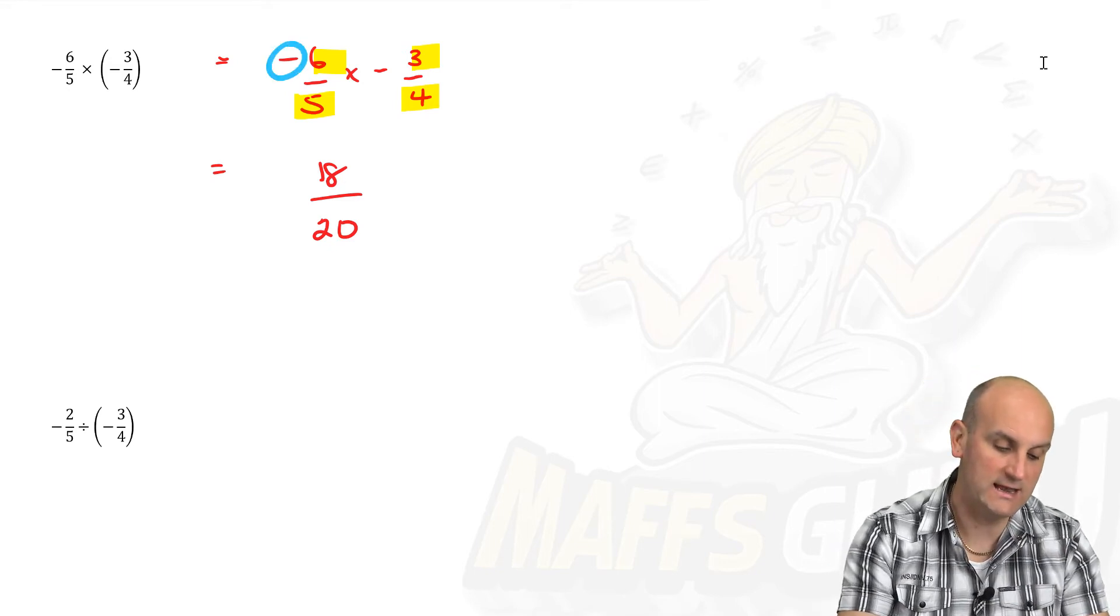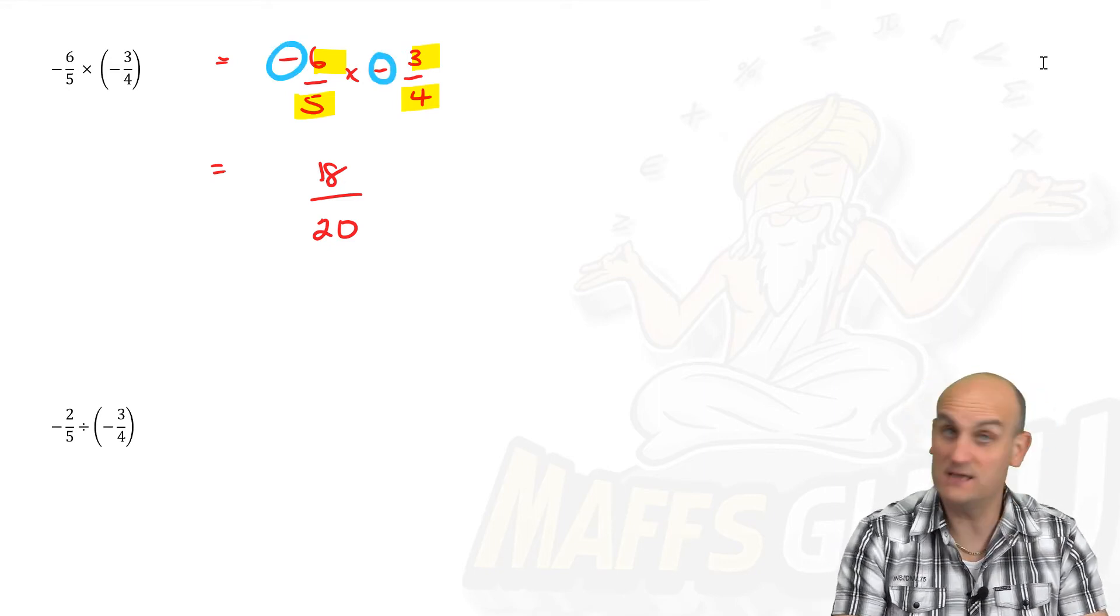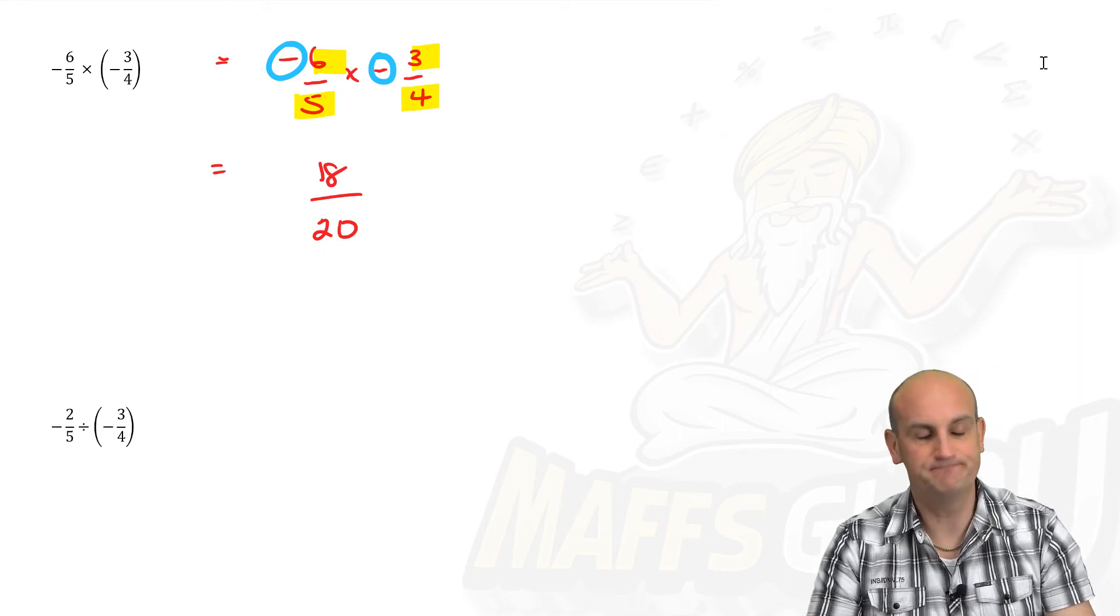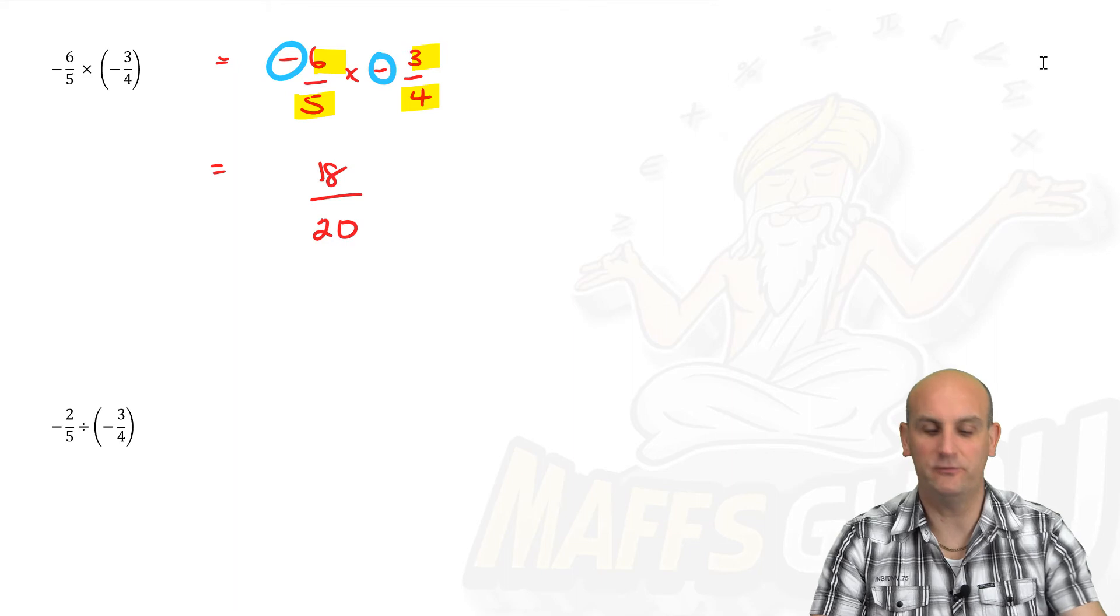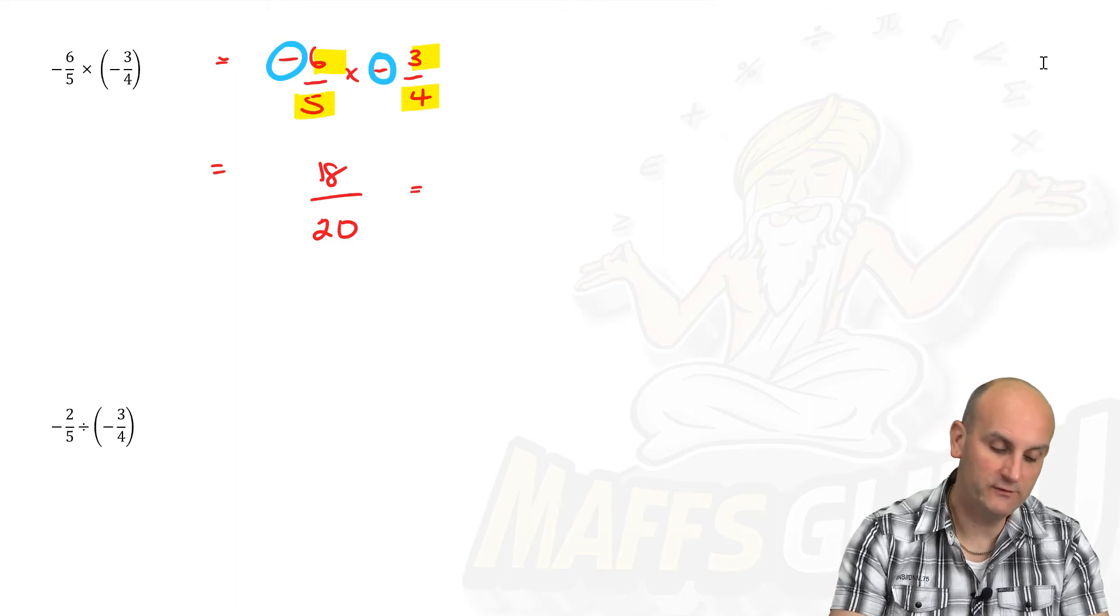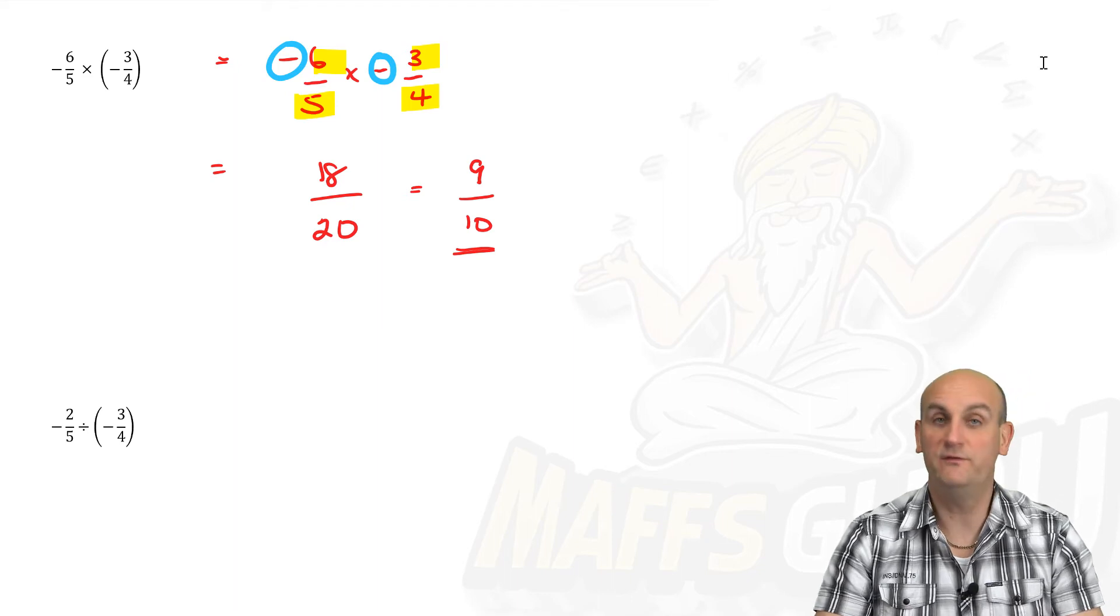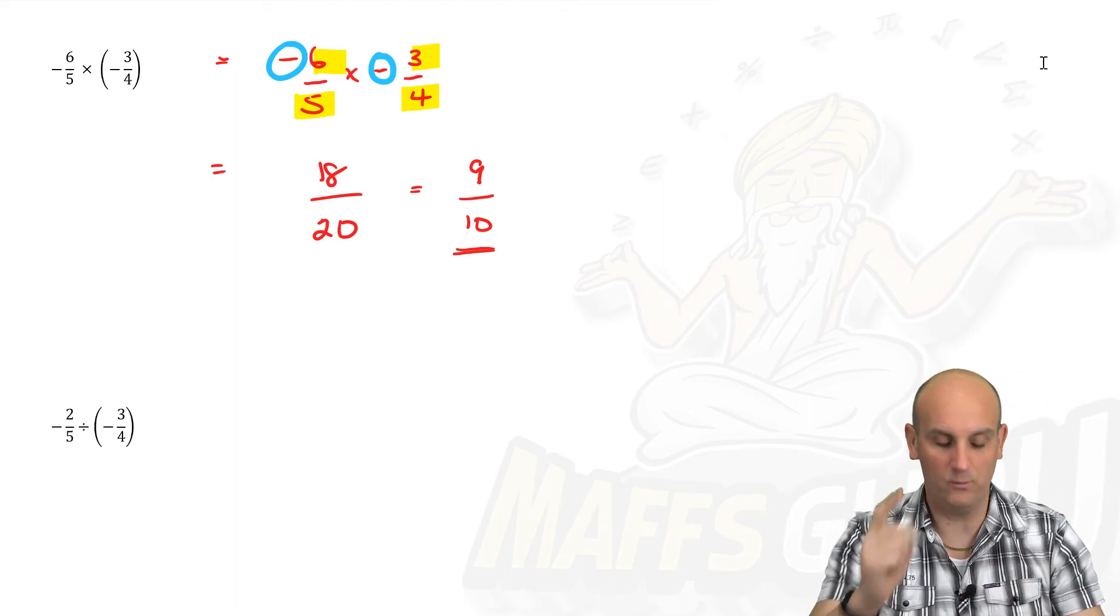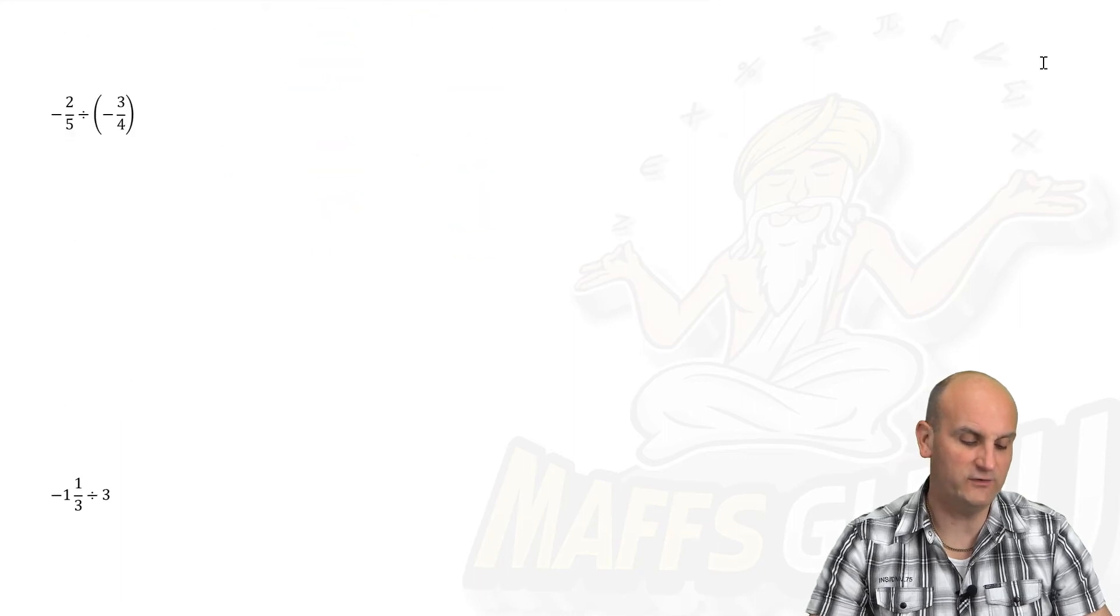Now I'm going to look at my signs. A negative and a negative. They're the same. So they become a positive. And that's my final answer? No, because I can cancel down. They're both even numbers. So that can become nine on 10. And are we finished? We are finished because no number goes into nine and 10 except one.